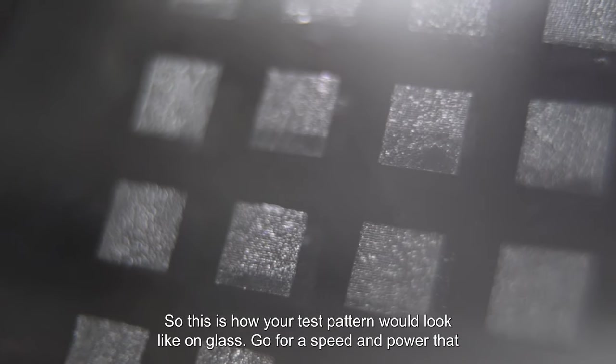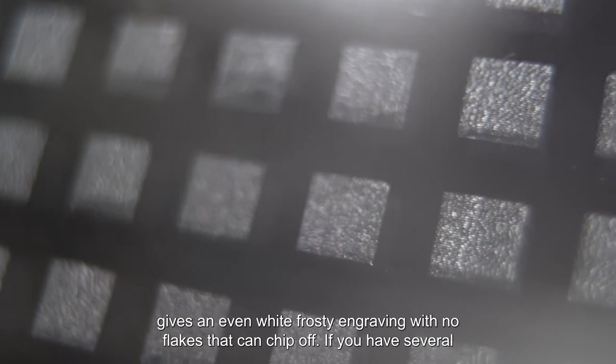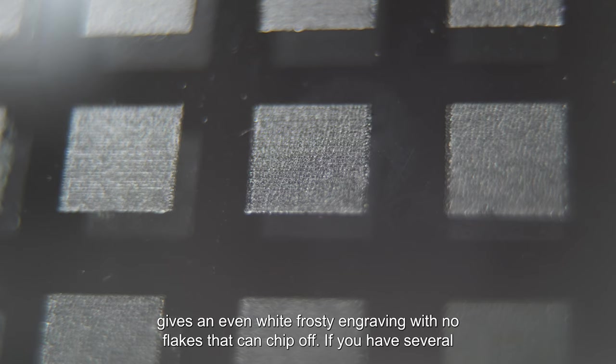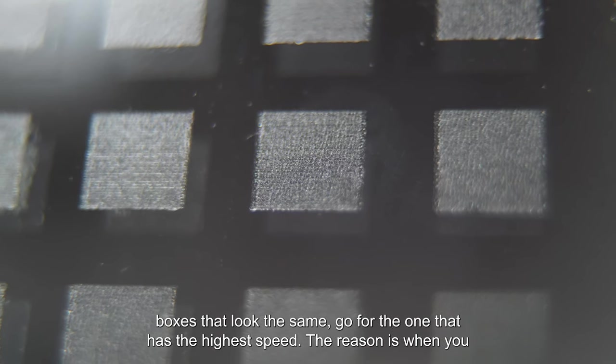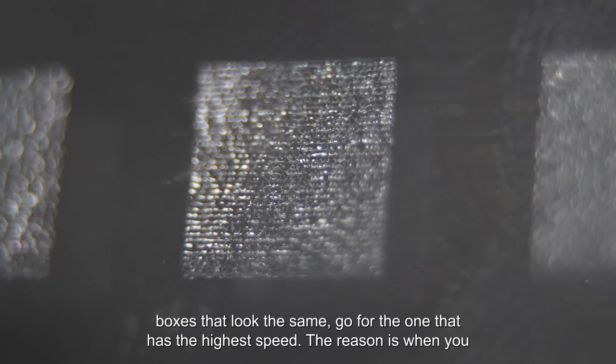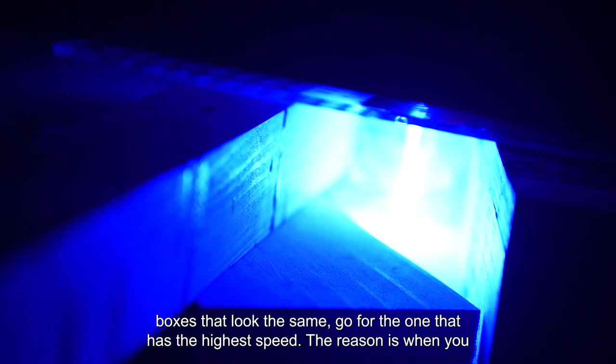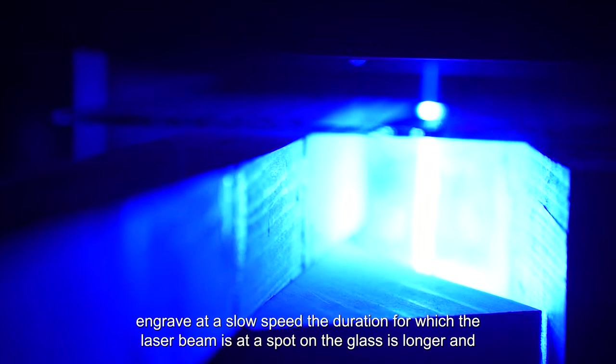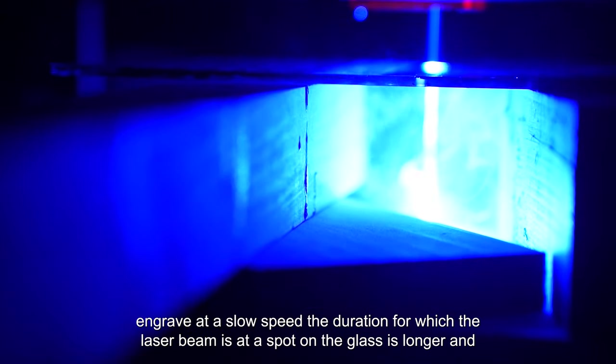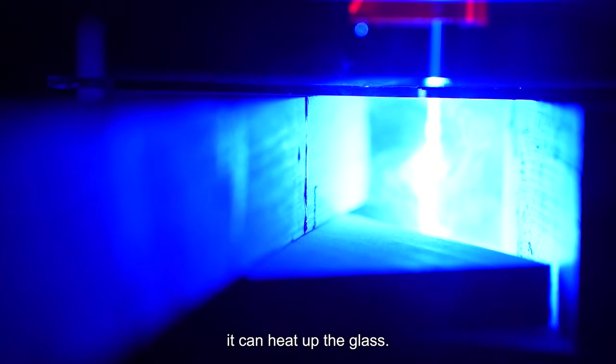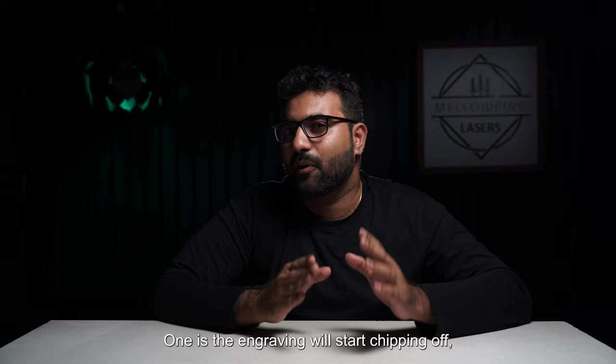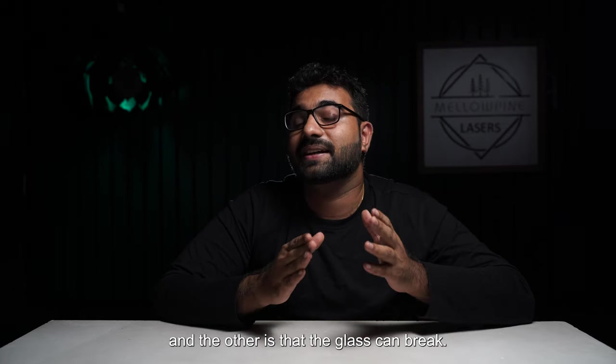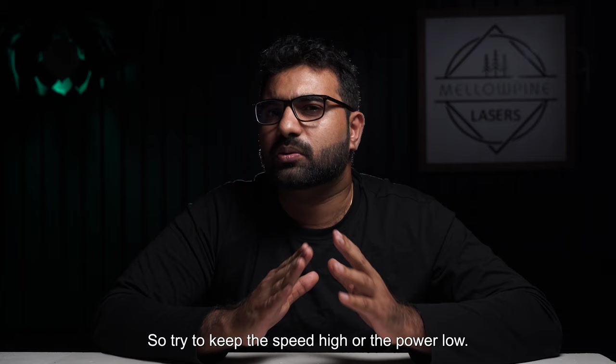So this is how your test pattern would look like on glass. Go for a speed and power that gives an even white frosty engraving with no flakes that can chip off. If you have several boxes that look the same, go for the one that has the highest speed. The reason is when you engrave at a slow speed, the duration for which the laser beam is at a spot on the glass is longer and it can heat up the glass. This has two consequences: one is the engraving will start chipping off, and the other is that the glass can break. So try to keep the speed high or the power low.